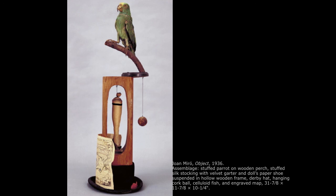Joan Miró is another Surrealist artist who is quite famous, well known for his paintings as well as his assemblages. An assemblage is very similar to a photomontage except that it is a three-dimensional object. In this case we see a stuffed parrot on a wooden perch, a stuffed silk stocking with velvet garter and doll's paper shoes suspended in a hollow wooden frame, a derby hat, a hanging cork ball, a fish, and an engraved mat. All of these identifiable objects are arranged in a juxtaposition that is very unfamiliar — this becomes the quintessential nature of the Surrealist movement itself.